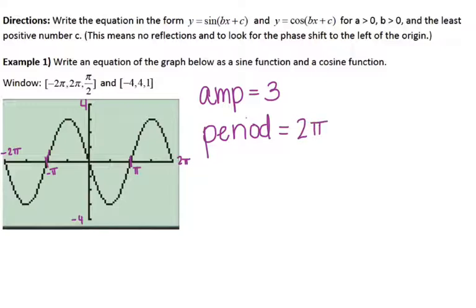We use the period to find b. So 2π equals 2π over b, which means b equals 1. So the number in front of x is going to be 1.